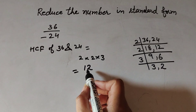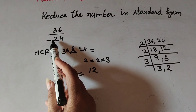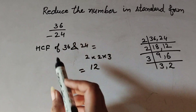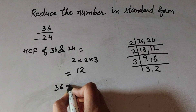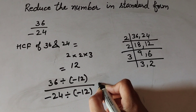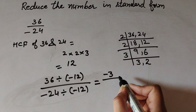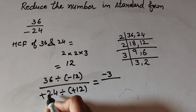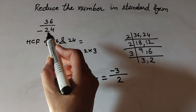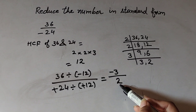The HCF of 36 and 24 is 12. Since the denominator has a negative sign and the standard form requires a positive denominator, we divide numerator and denominator by -12. 36 divided by -12 gives -3, and -24 divided by -12 gives 2. So -3/2 is the standard form of 36/-24. In this result, 1 is the only common factor and the denominator is a positive integer.